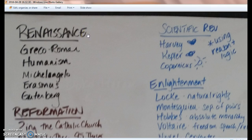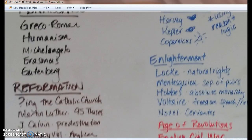We begin the course with the Renaissance, which is based on Greek and Roman ideas, with an emphasis on humanism — the focus on individuals. Key people include Michelangelo, who did the Statue of David and the Sistine Chapel with the Creation of Adam. Erasmus is one of the best examples of a humanist; he wrote The Praise of Folly, starting to question the church. Gutenberg is super important because his printing press leads to the spreading of Renaissance and Reformation ideas, and he helps increase literacy.